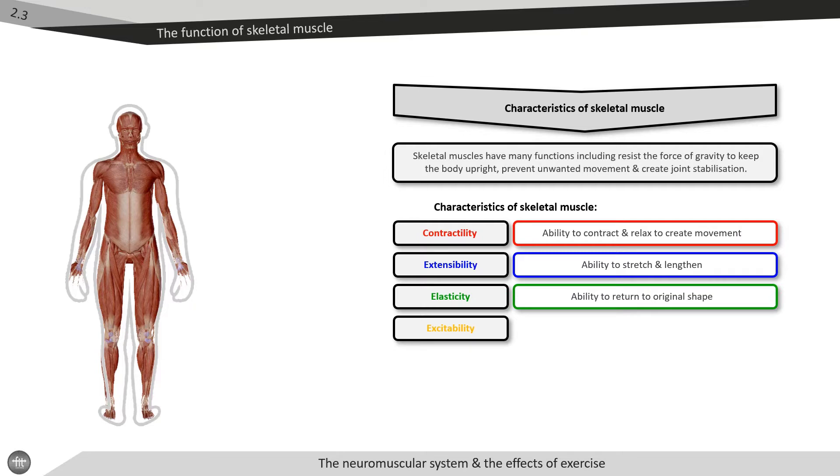Elasticity is the ability to return to its original shape. Skeletal muscle is elastic due to the elastin contractile proteins. It can stretch and then recoil. Finally, skeletal muscle is excitable as it has the ability to respond to impulses created from the somatic nervous system.